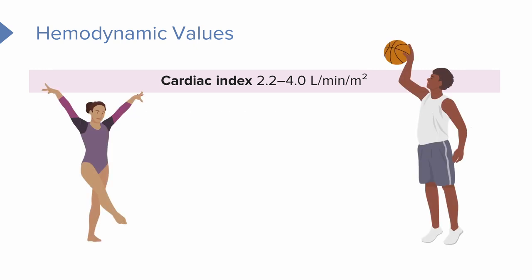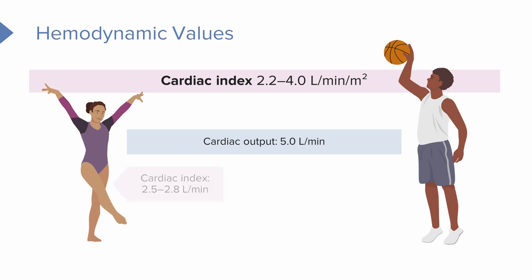Here's an example: take a 7-foot basketball player and a 5-foot gymnast. Both have a cardiac output of 5.0. For the gymnast, it's going to perfuse everything from the brain to the kidneys to the gut to the toes. But for the basketball player, it's not going to be enough. The cardiac index of the gymnast might be 2.5 to 2.8 — definitely enough — but the basketball player's cardiac index will be 1.5 to 1.8, which is not enough to perfuse everything. So we like to look more closely at cardiac index since it's normalized for every patient.